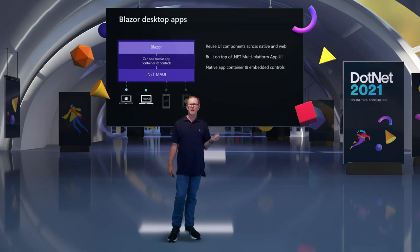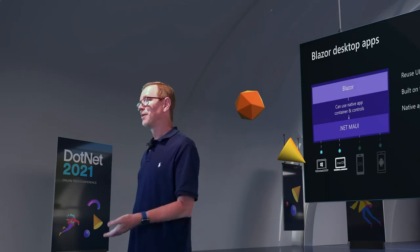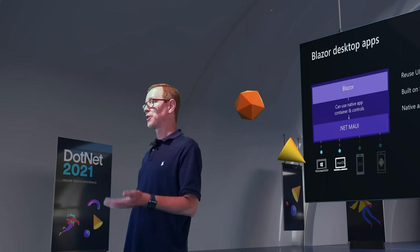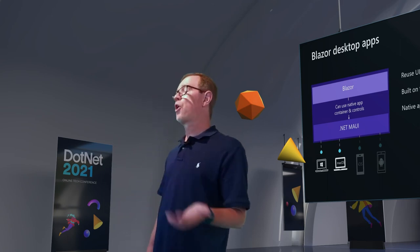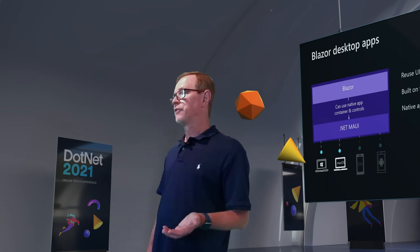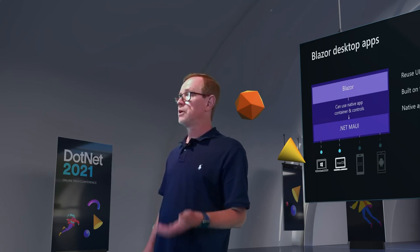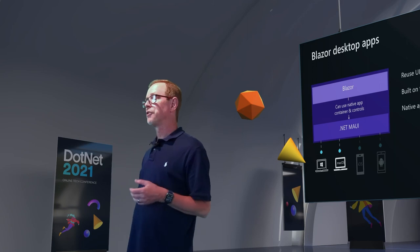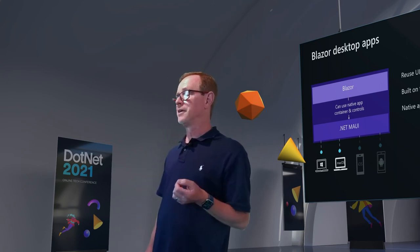Why put Blazor on the desktop? If you put Blazor on the desktop, it has access to the file system — VS Code is an Electron application that does the same thing. It has access to all the hardware. There may be cases where your web app can't do as much as you want; you turn it into a desktop application that can do everything, and the cool thing is you can do all of this in .NET.